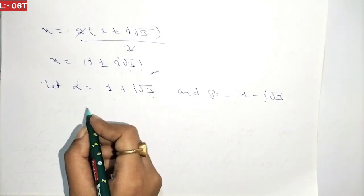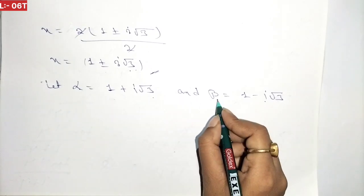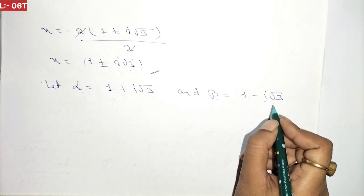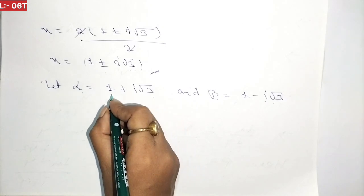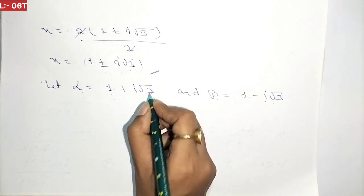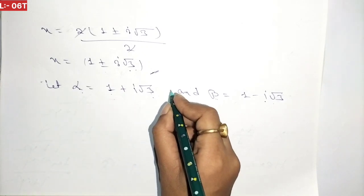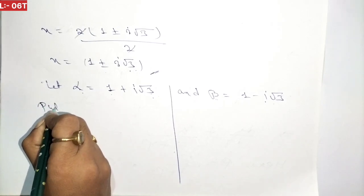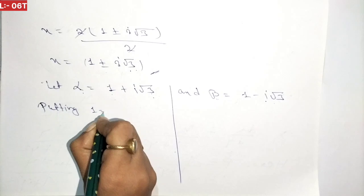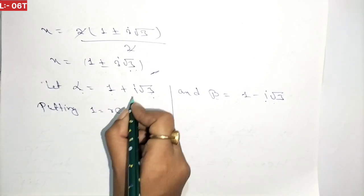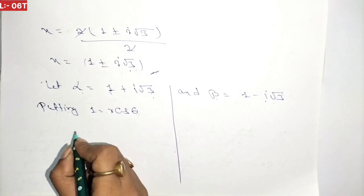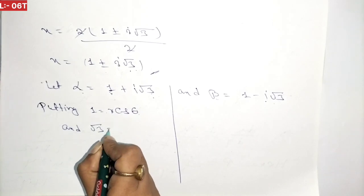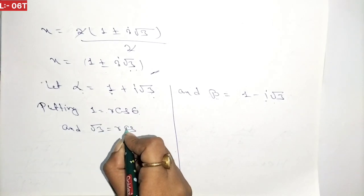Now we have to prove that alpha raised to the power n plus beta raised to the power n equals 2^(n+1) cos(nπ/3). To do this, we will convert alpha and beta into polar form, meaning the form r(cos θ + i sin θ). So we let 1 equal to r cos θ (the real part).